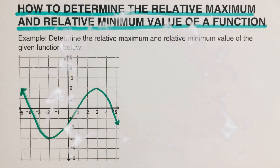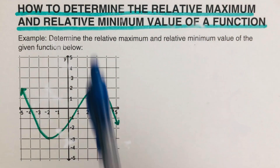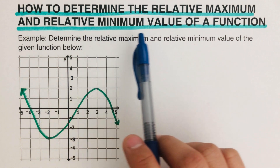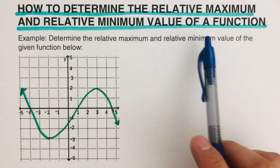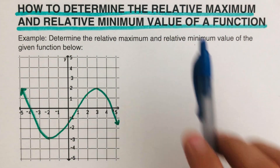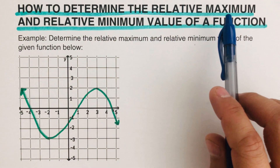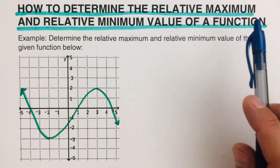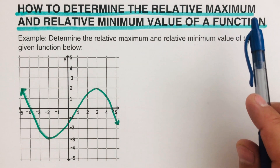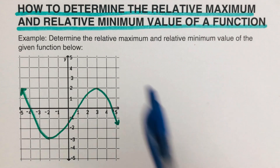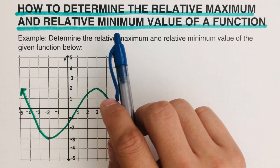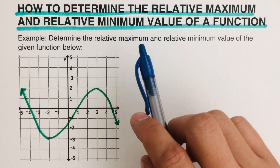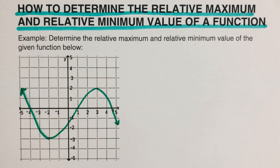Hello everyone. In this video we are going to determine the relative maximum and relative minimum value of a function. By definition, relative maximum refers to the peak in the graph, or pretty much like the top of a hill, while the relative minimum is the bottom in the graph, or the lowest point in the valley.